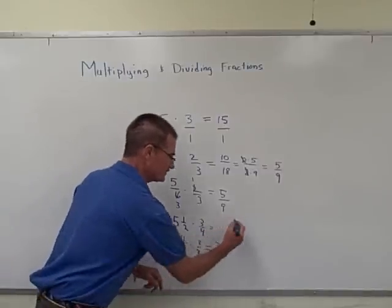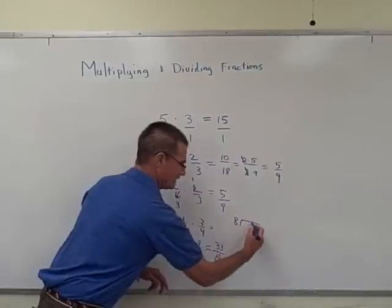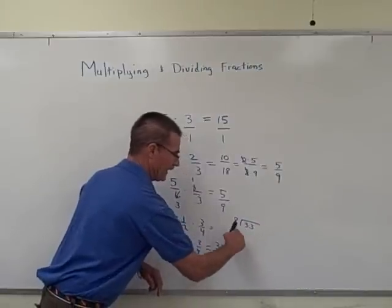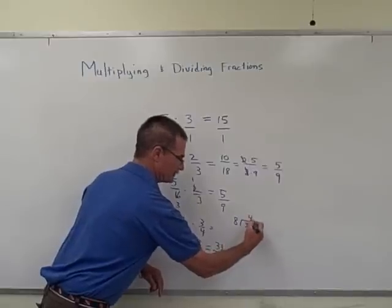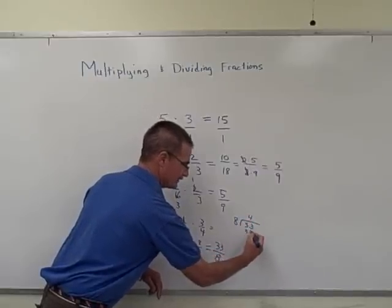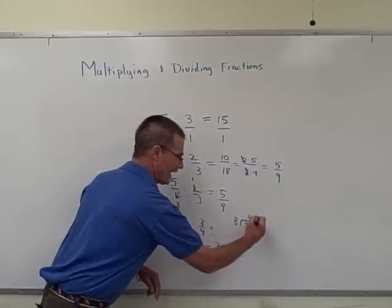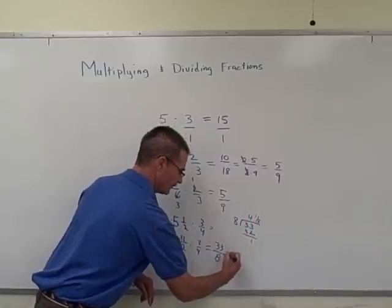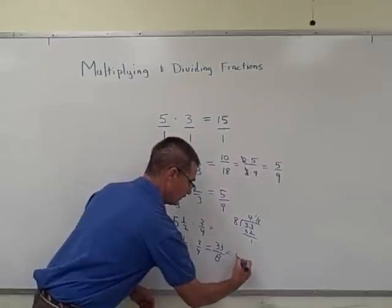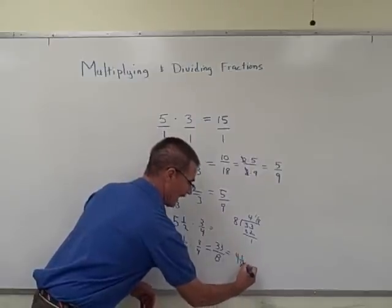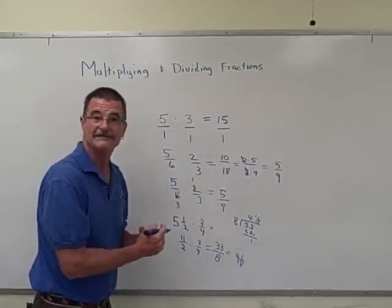So we could always change that back by dividing the 8 into the 33. 8 goes into 33 four times. 4 times 8 is 32. Subtract and get 1. So we have 1 eighth left over. So 33 eighths, an improper fraction, could be expressed as 4 and 1 eighth, which is now a mixed number.